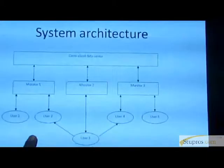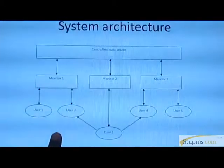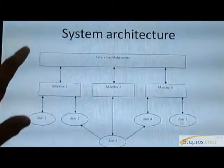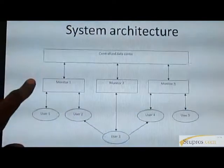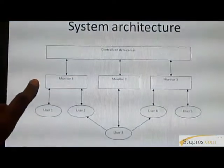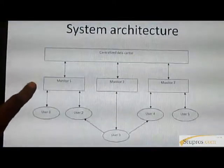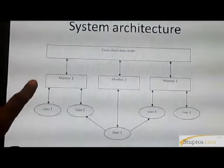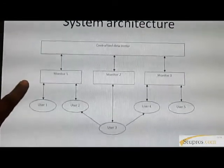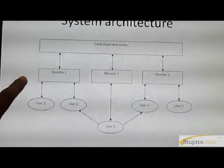The system architecture is shown in the figure. The decentralized data center acts as a server. Users can enter into the server in the form of monitors. Monitors only can able to provide a detection mechanism for camouflaging worm detection and analysis of the detection of the camouflaging worm.